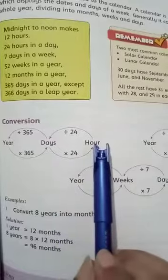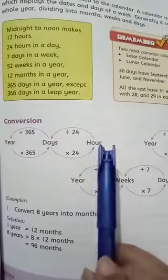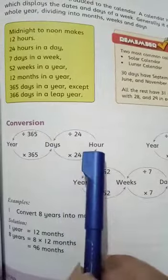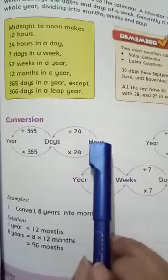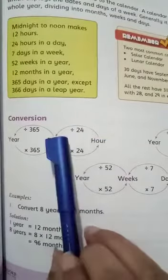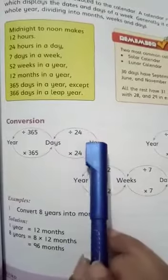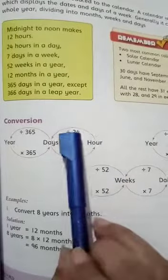Then, in one day we have 24 hours. If we convert days into hours, we multiply by 24. When converting from a smaller unit to a larger unit, we divide. So if we convert hours into days, we divide by 24.